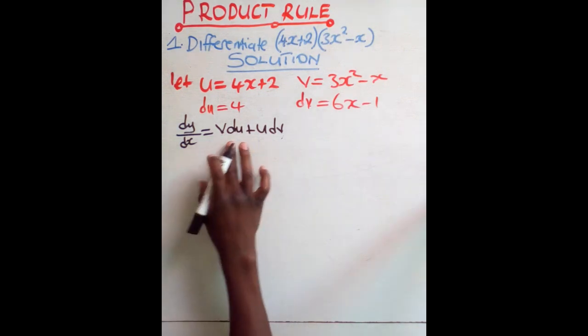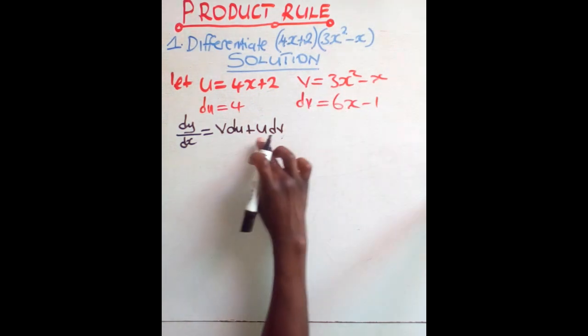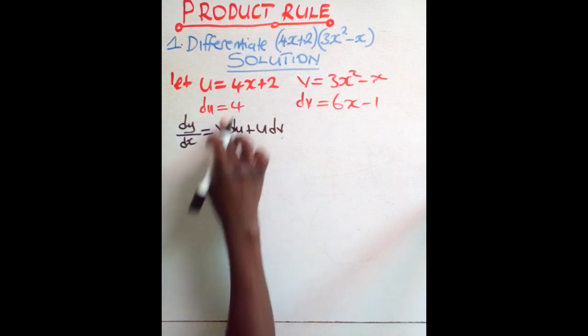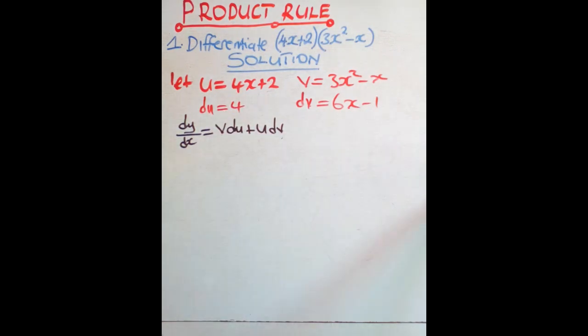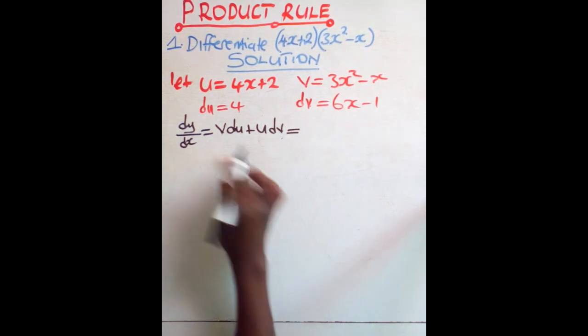So in this case, we have already portioned. In that position we put v. This is u, in that position we put u. Du we found it, dv is found also. So from there you substitute, you say this is equal to v.